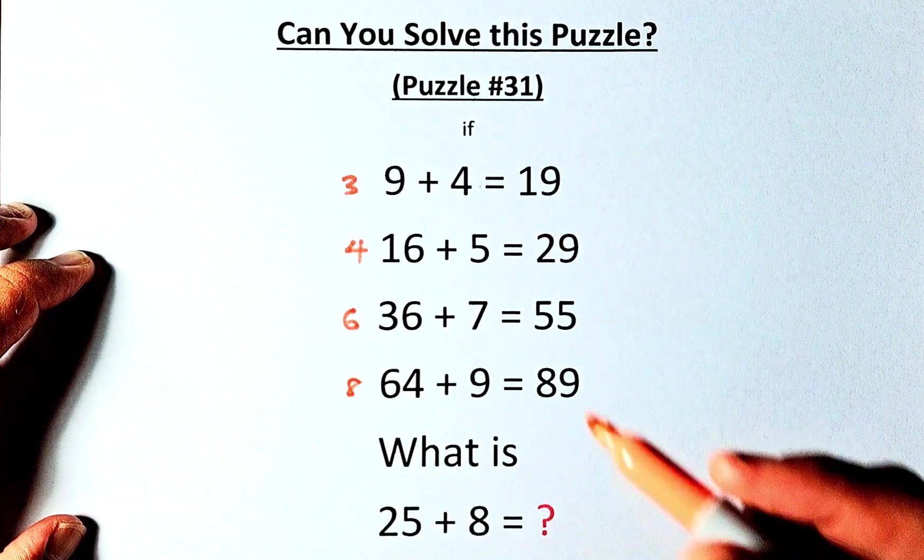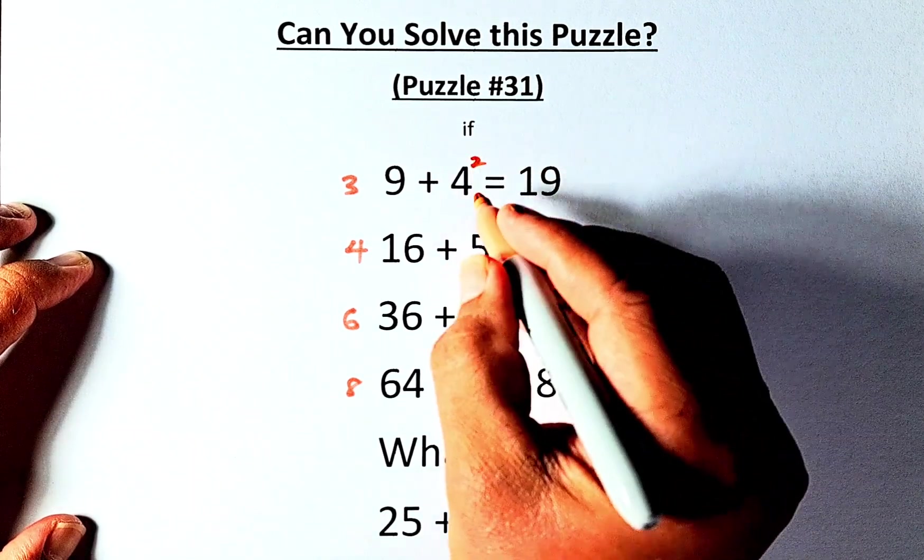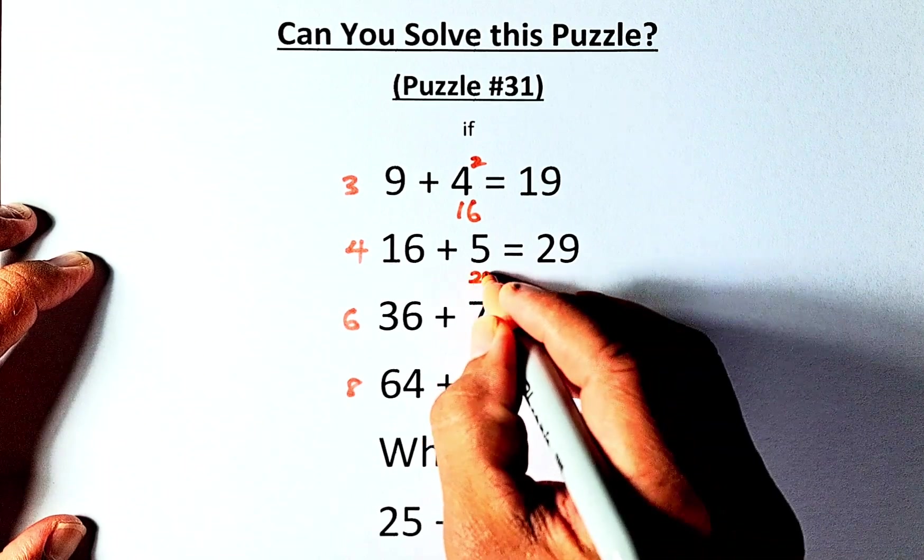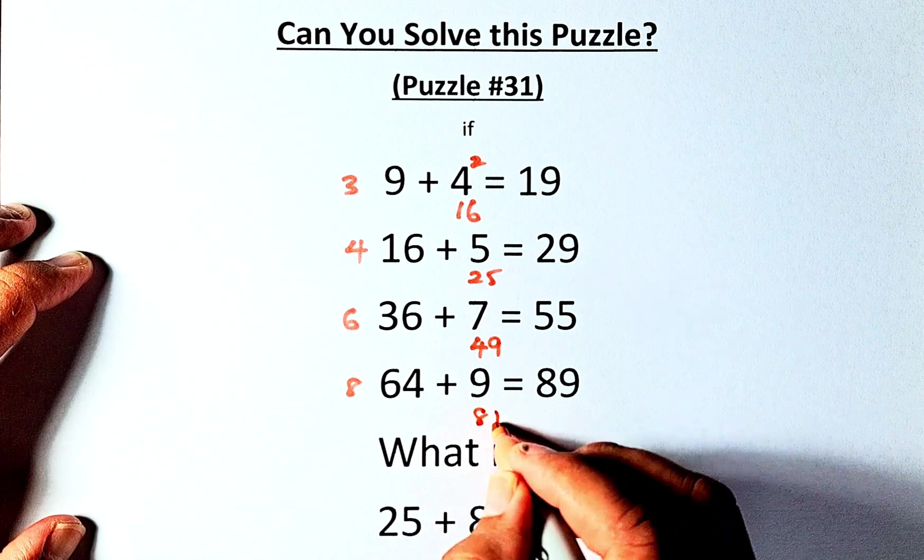On the second number, 4, 5, 7, 9, what we're going to do is we are going to square it. 4 squared is 16, 5 squared is going to be 25, 7 squared is 49, and 9 squared is 81.